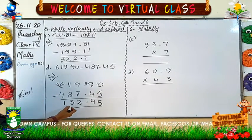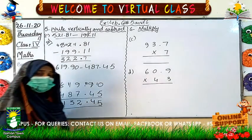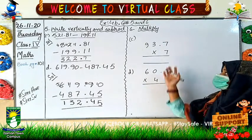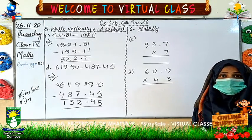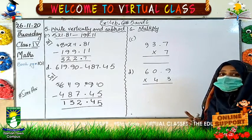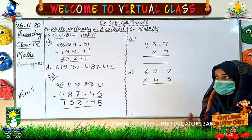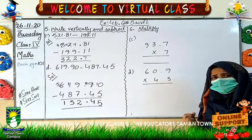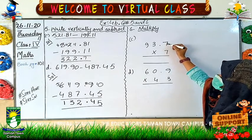My dear students, my question was 619.90 and I had to subtract 487.45. I got my answer 132.45. That was all about subtraction. Now we have to solve multiplication. They have given you 2 questions. It is very necessary whenever we are going to do multiplication that we learn the tables. Here I am going to solve 2 questions, C and D. One part of multiplication is called the multiplicand.